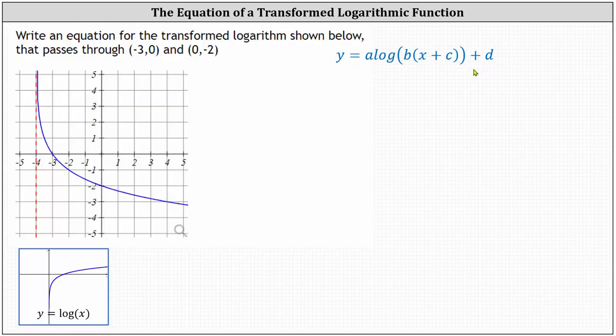It's important to be familiar with the graph of the basic common log function shown here. It's important to be familiar with the general shape and also to recognize that we have a vertical asymptote at x equals zero.